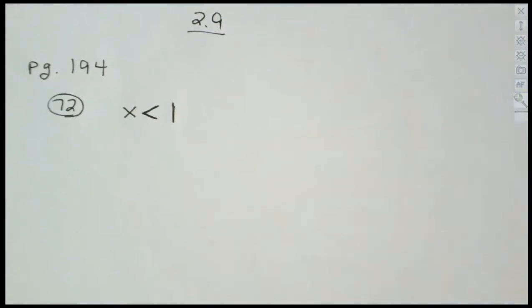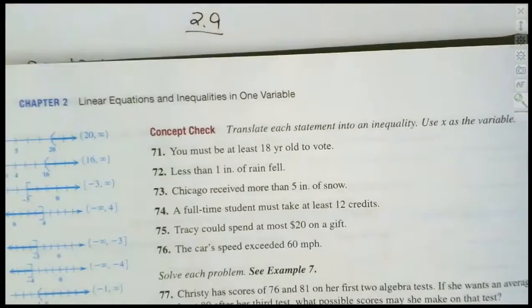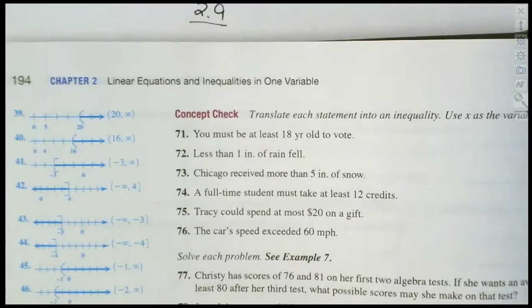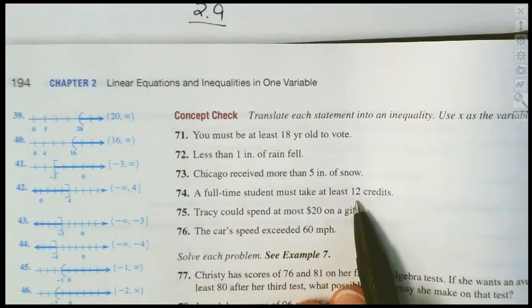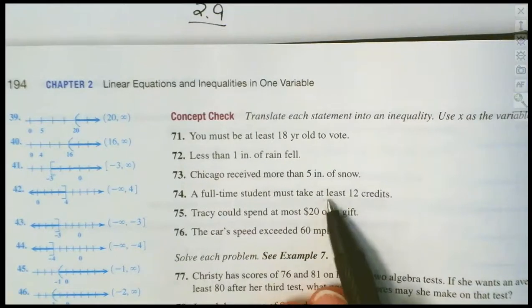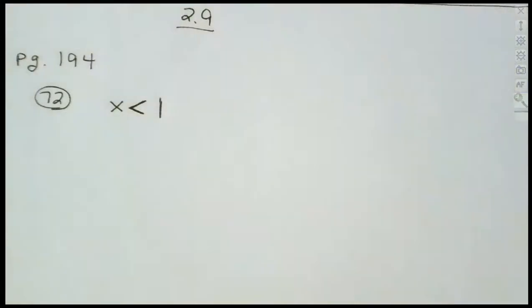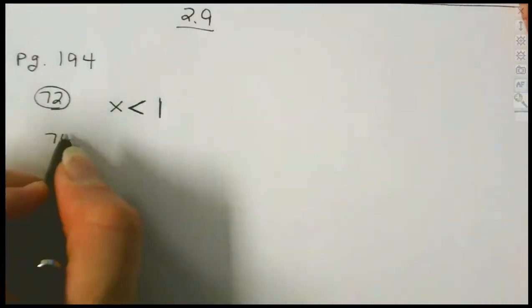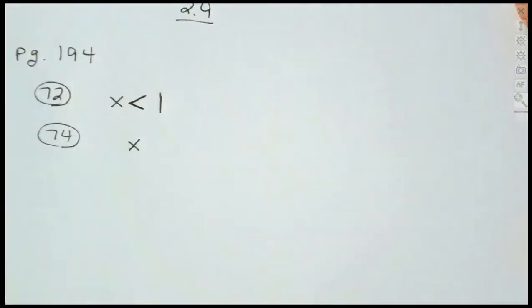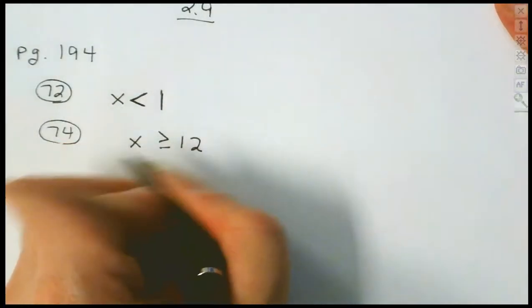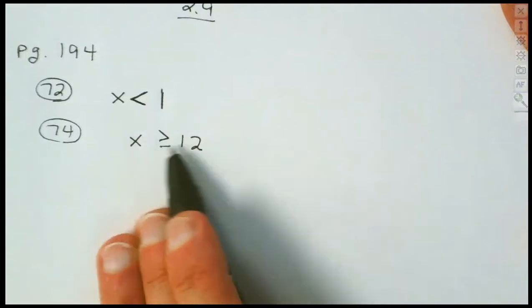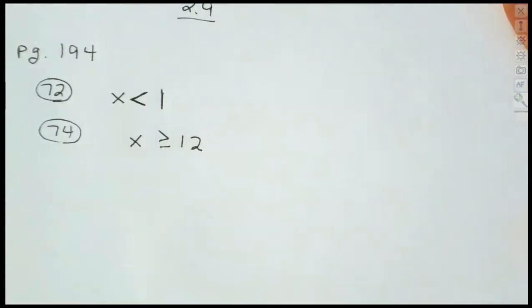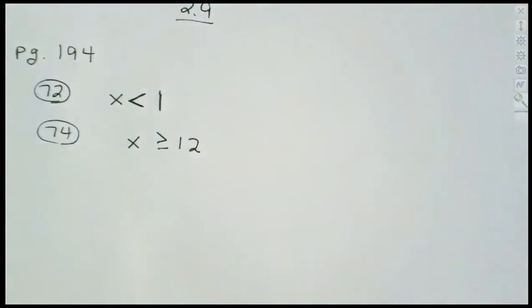Let's look at question 74 to make sure we can set these up correctly. A full-time student must take at least 12 hours. We want at least 12 hours — that means it could equal 12. So we want x to be greater than or equal to 12. The inequality opens towards x because x is the bigger number. At least means we have the bar there, so x ≥ 12.